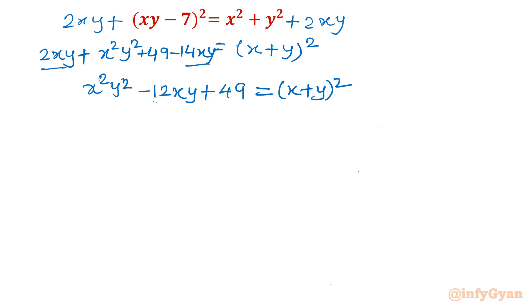Now I can see because this is 12, I will split this 49. Let me write x square y square minus 12xy plus 36 plus 13. 49 becomes 36 plus 13. The advantage would be this is xy minus 6 whole square plus 13 equal to x plus y whole square.